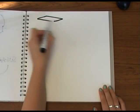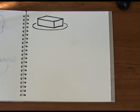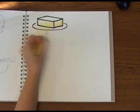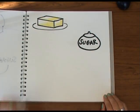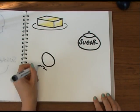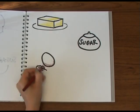A standard sponge cake mix has four main ingredients: fat, usually butter, sugar, eggs, and flour.